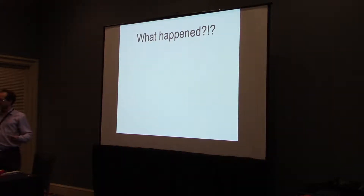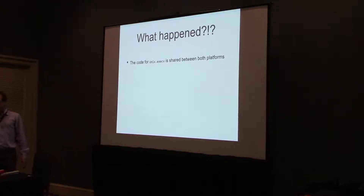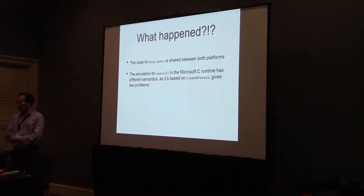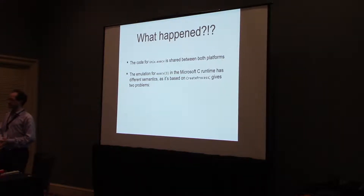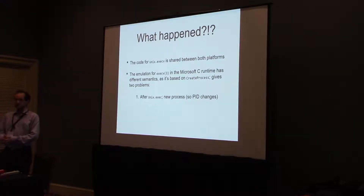So, what happened? The code for execvp is exactly the same on Windows and Unix — there's nothing in the OCaml code that's different, it called the underlying C library. What is different is that Microsoft lied. There is no execvp — it's an emulation based on the underlying CreateProcess call. Rather than doing anything that looks like a Unix exec, it created a new process and killed the existing one. So what happens at that point is your PID changes — you are, in fact, a new process.